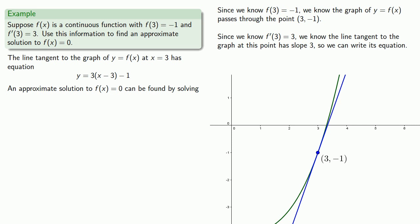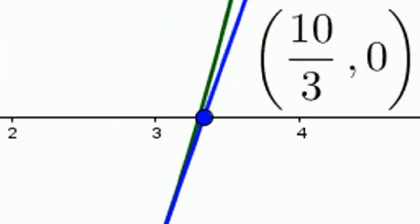So we'll let y = 0 in the equation of the line and solve for x. And we find x = 10/3, which means that f(x) = 0 has a solution around 10/3.